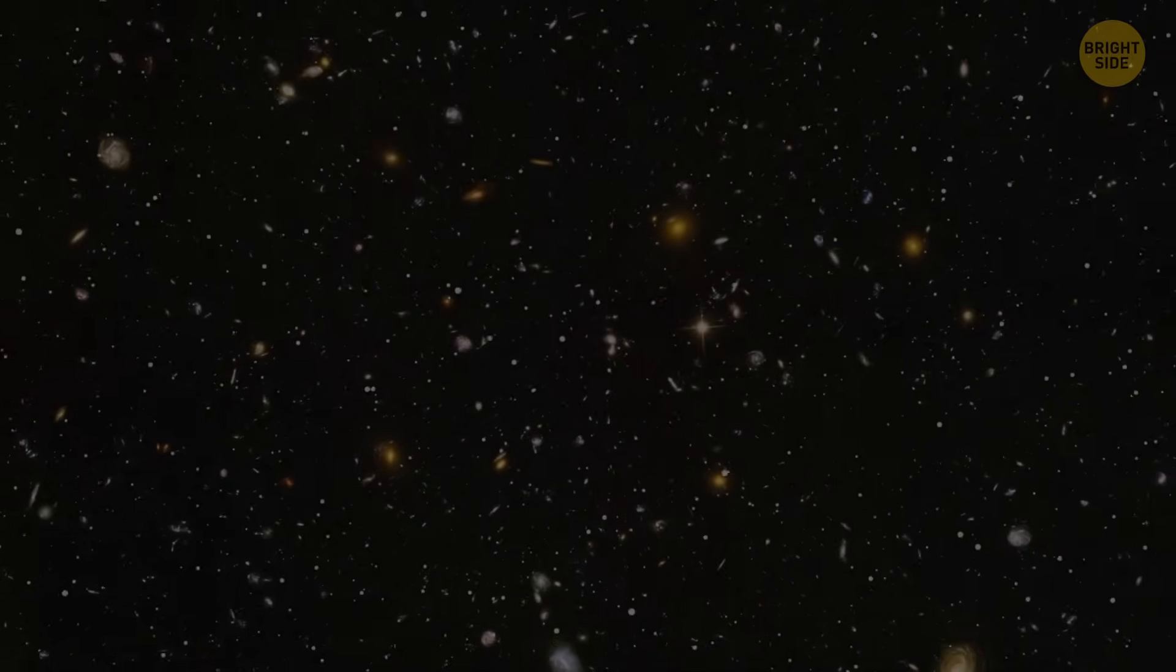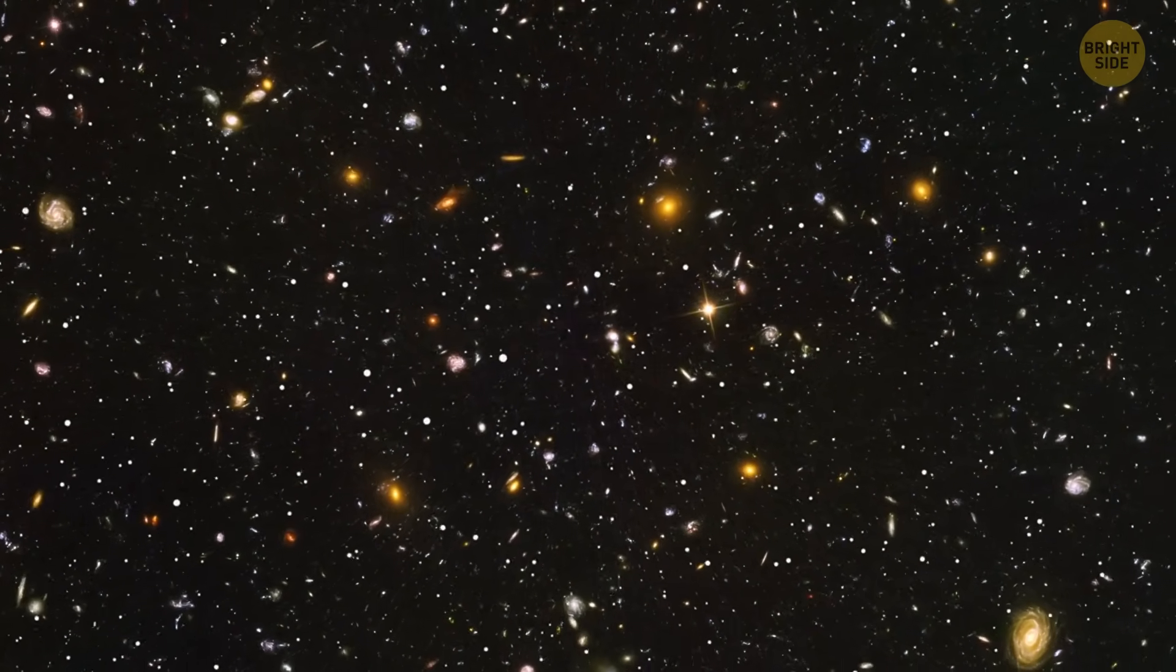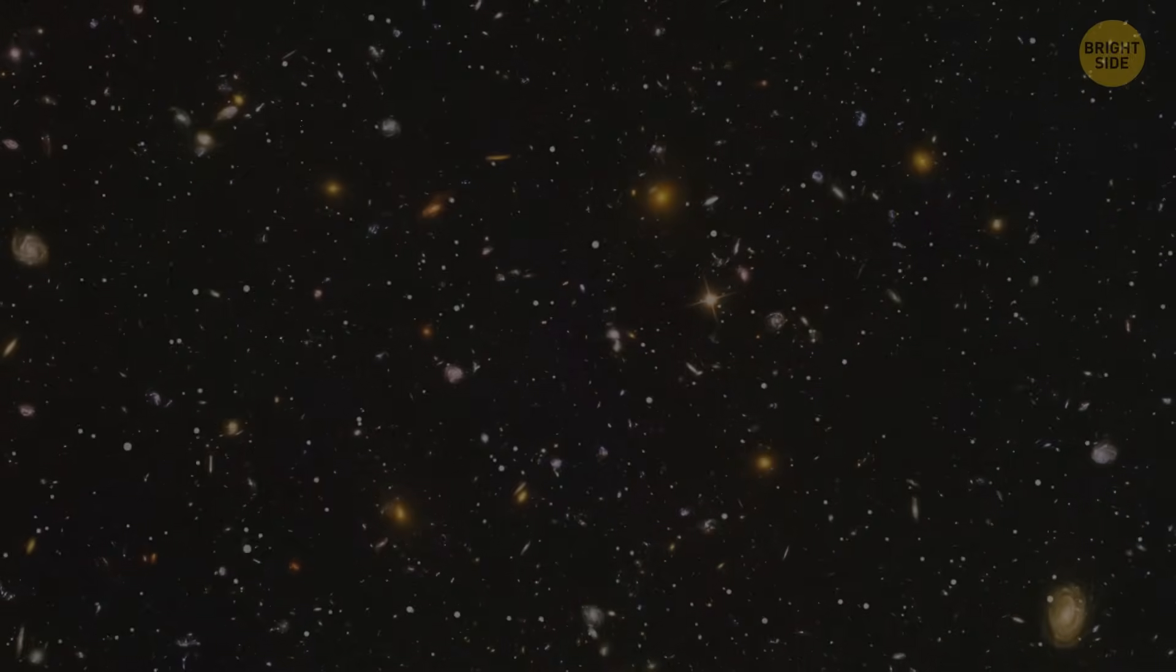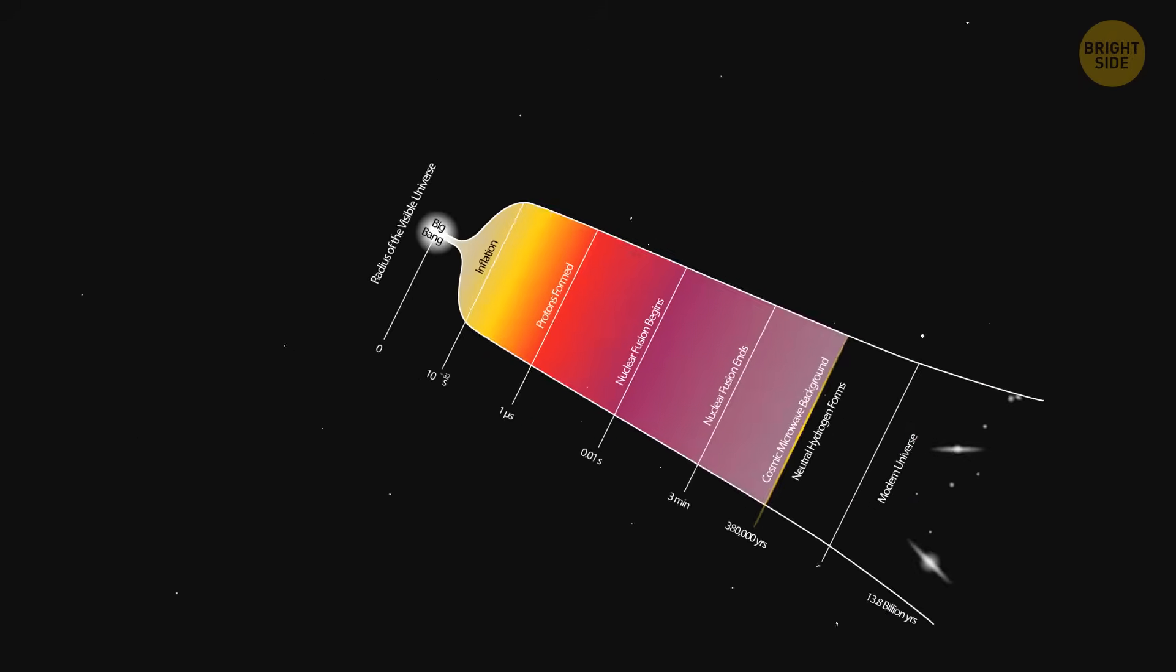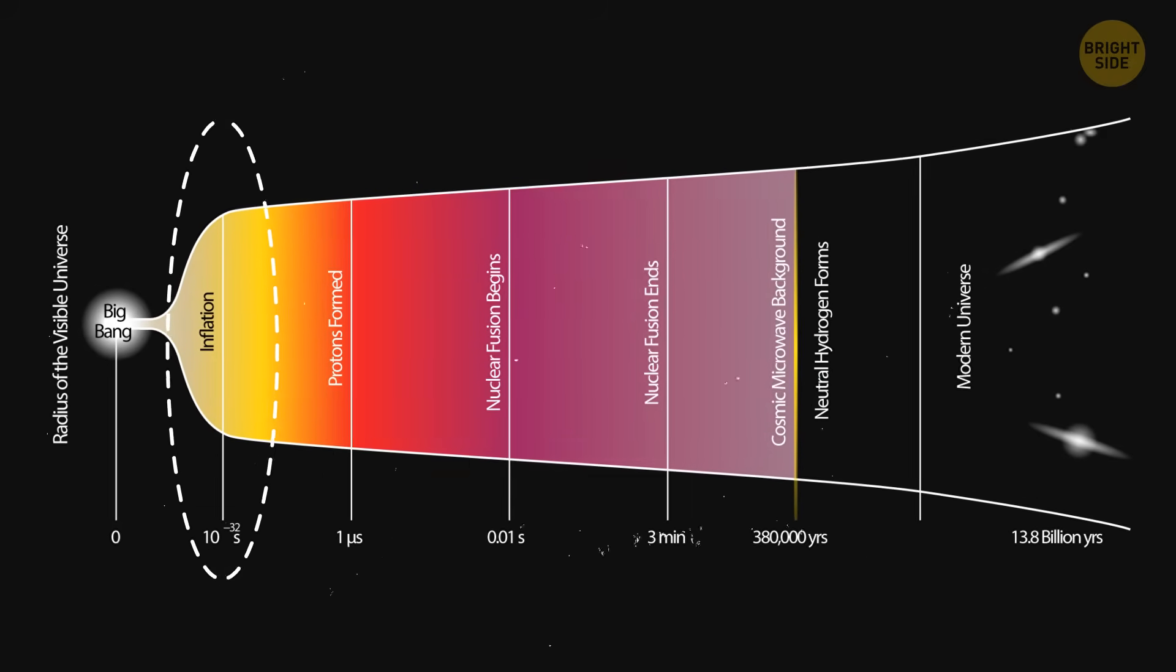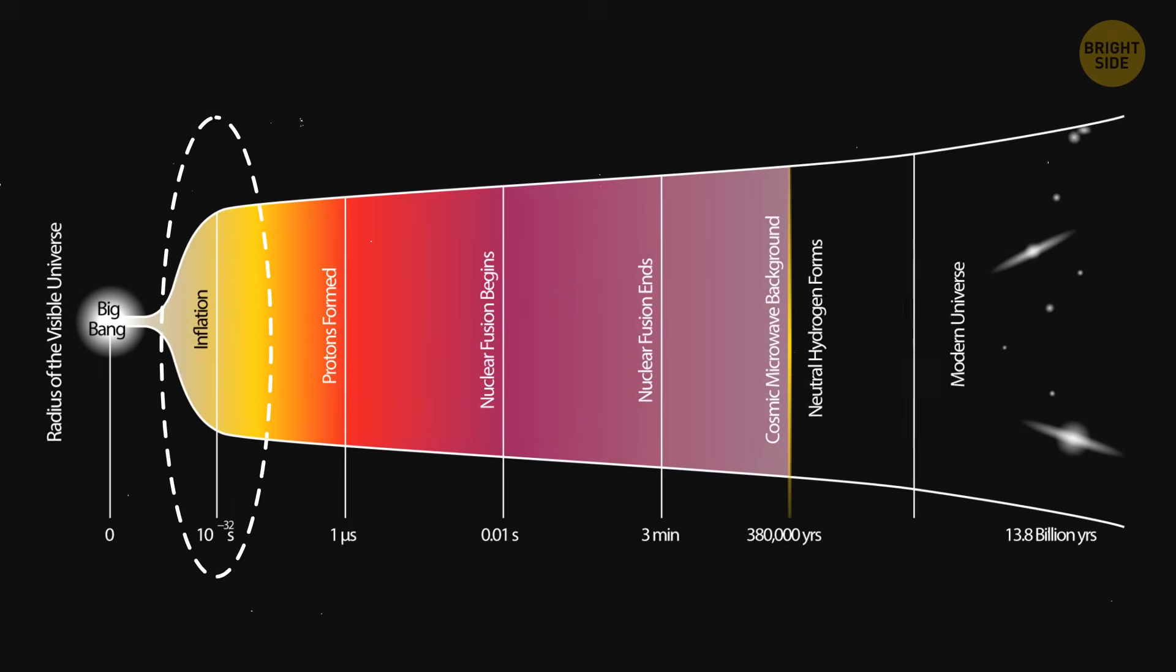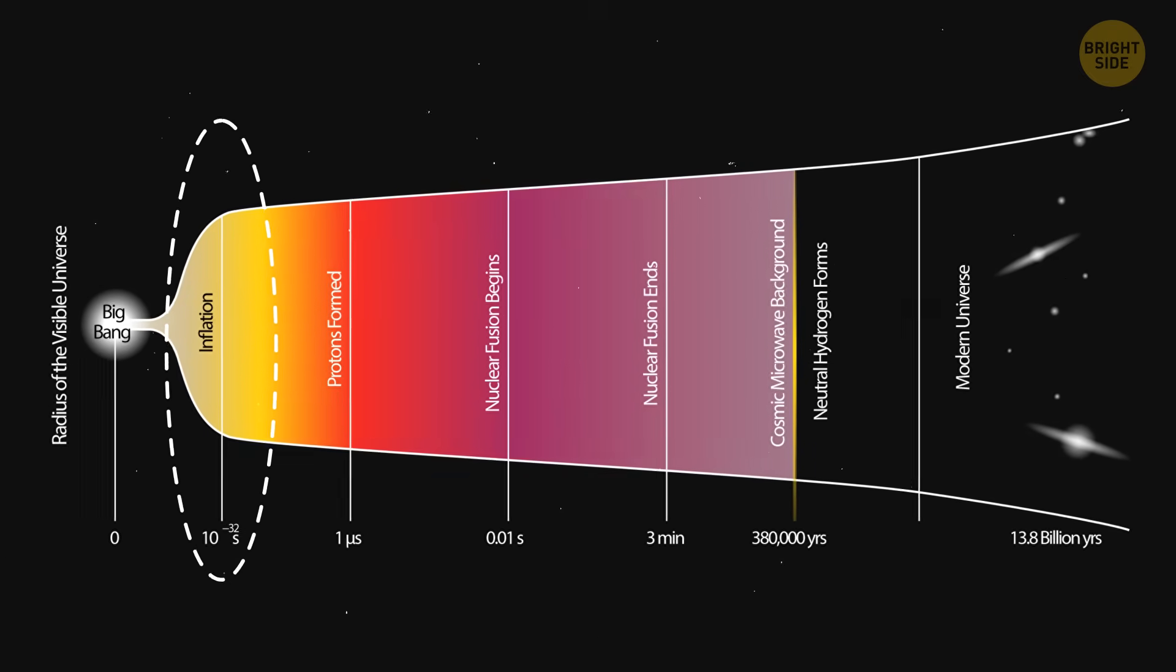The way the universe went pop has led some clever researchers to ponder the existence of more than one universe. They questioned whether that sudden growth ended everywhere at the same time. While the expansion ceased for everything we're able to see from Earth 13.8 billion years ago, cosmic inflation might still be ongoing in some other mysterious corners.